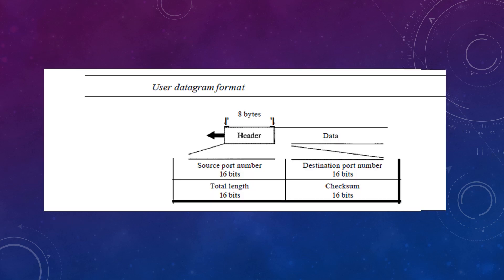You can see the UDP header. It is a 32-bit header, and this 32-bit header is divided into four main parts: one is the source port of 16-bit, next is the destination port of 16-bit, then the length of 16-bit, and finally the checksum of 16-bit.